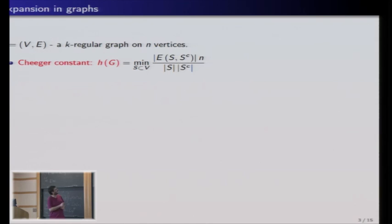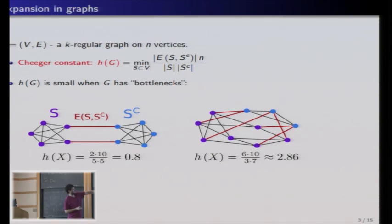So here is the more formal definition. Let's take for simplicity a k-regular graph on n vertices. The Cheeger constant, this is one of several pretty equivalent definitions, is the minimum of the number of edges going between the cut of the graph. So I look at the subset and its complement, I want to minimize the number of edges between them and also normalize by the size of the sets.